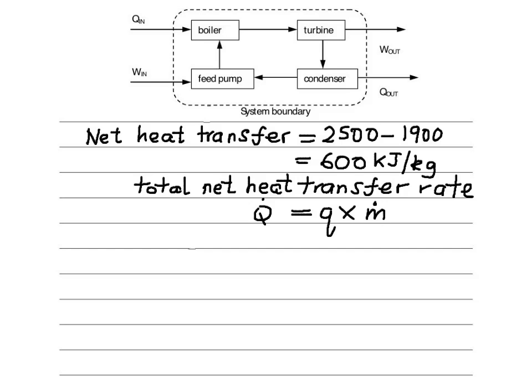We know the final answer is supposed to be the output work per second, that is the output power. This is a useful thing to remember in thermodynamics: for a cycle, Q dot equals W dot.